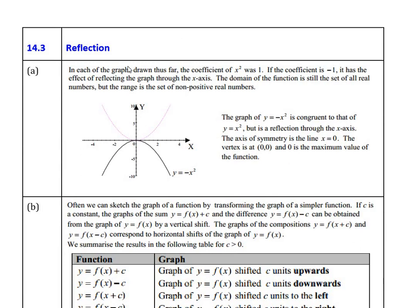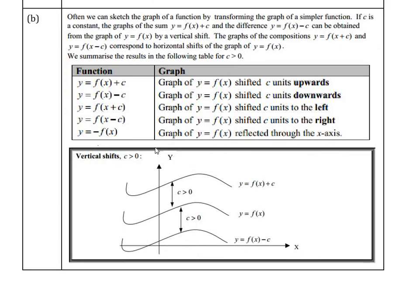We also did symmetry. The one we use most here is reflection in the x-axis. When we reflect a graph in the x-axis, we have the negative of the original equation. So if we have x squared, we now have negative x squared — reflection in the x-axis always gives us the negative of the previous function.